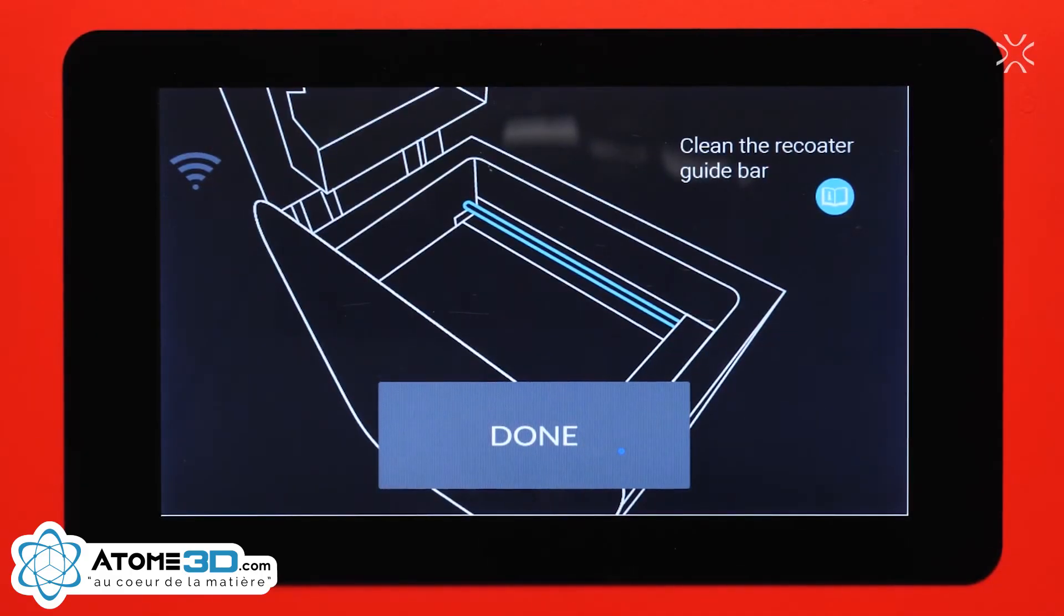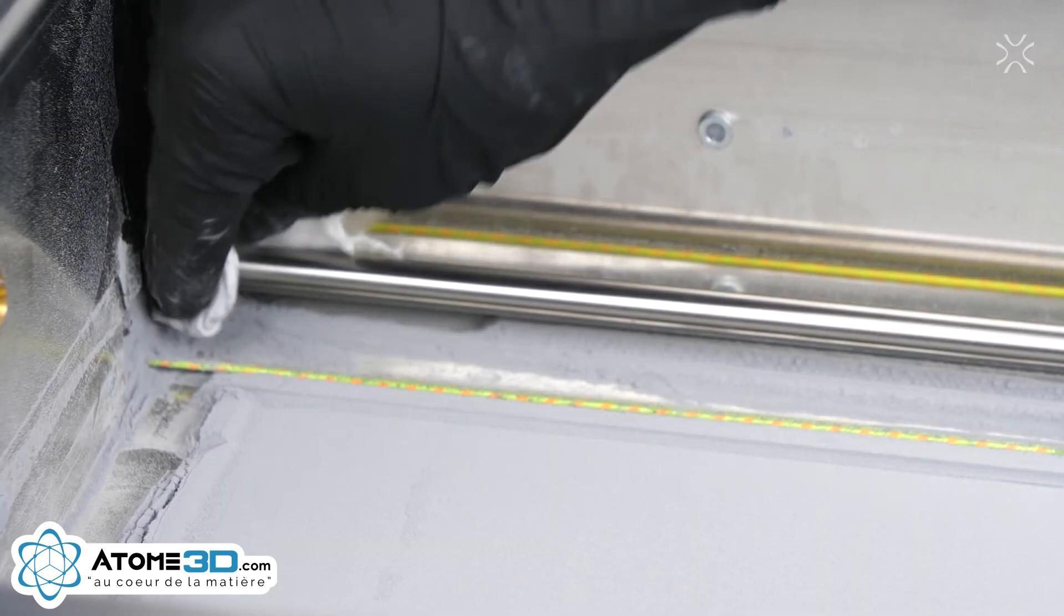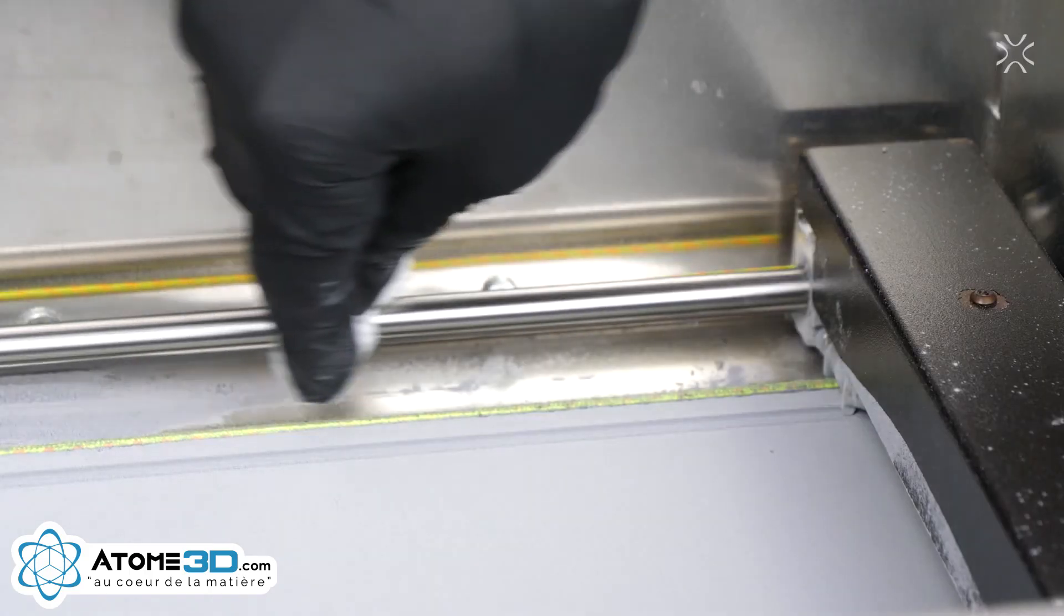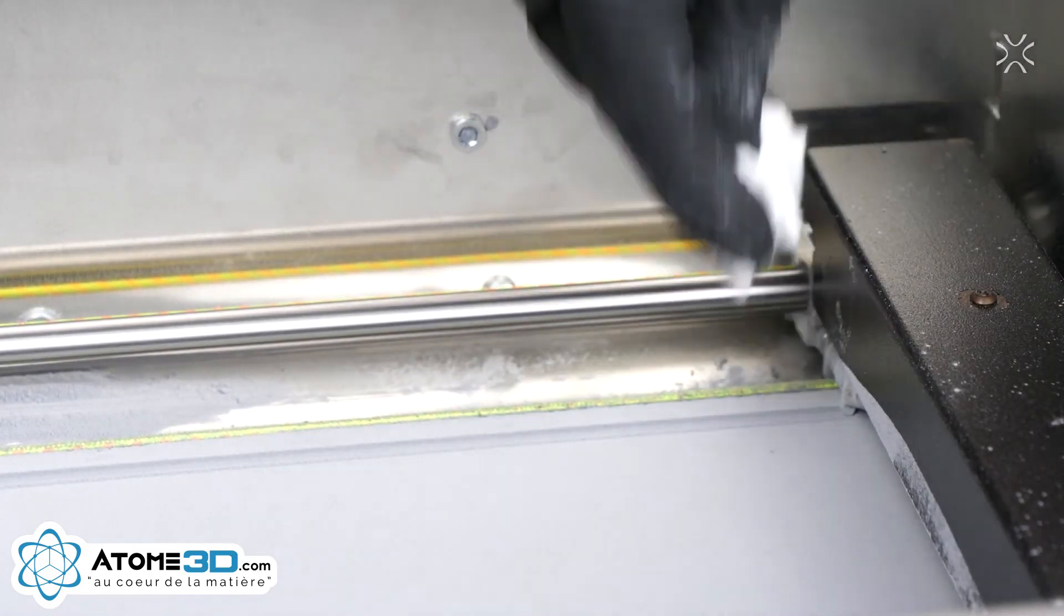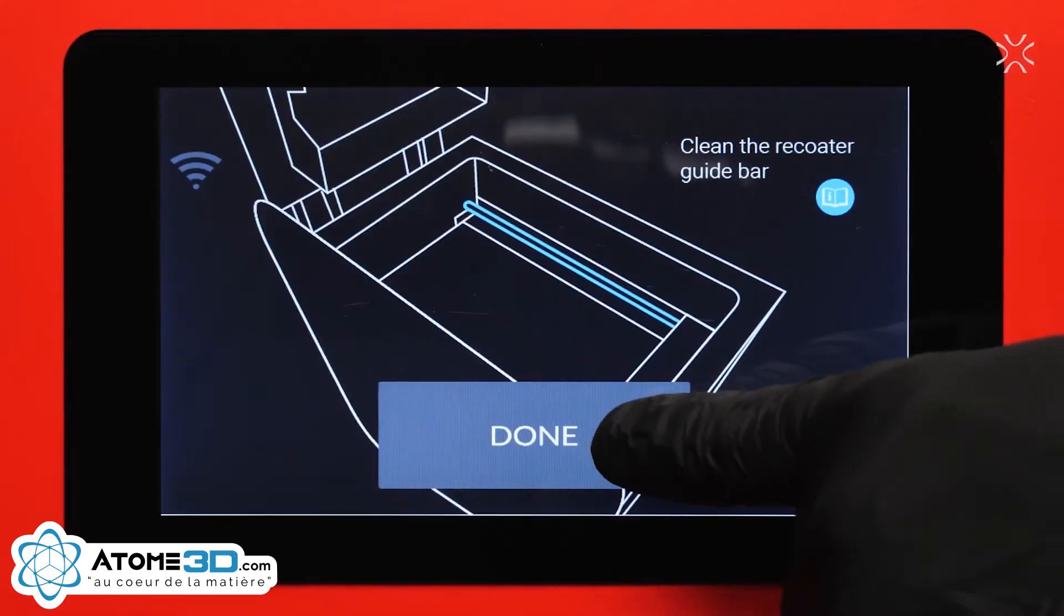Now, using the same cloth, clean the Recoater's guide bar. Press Done.